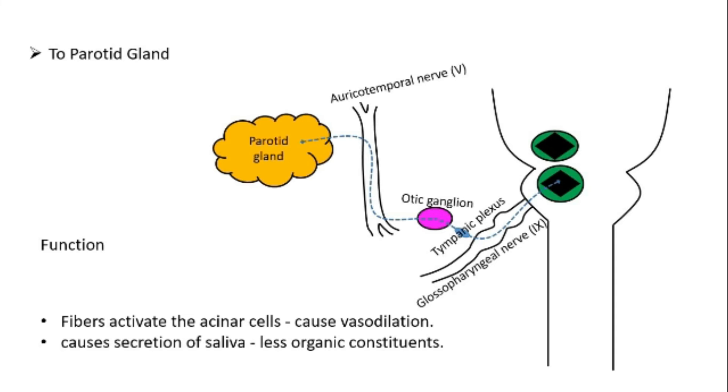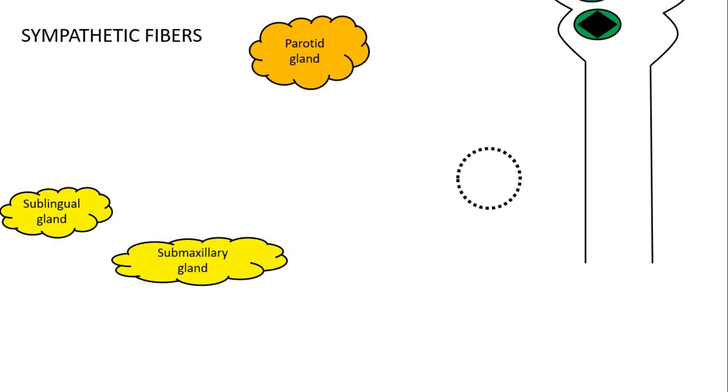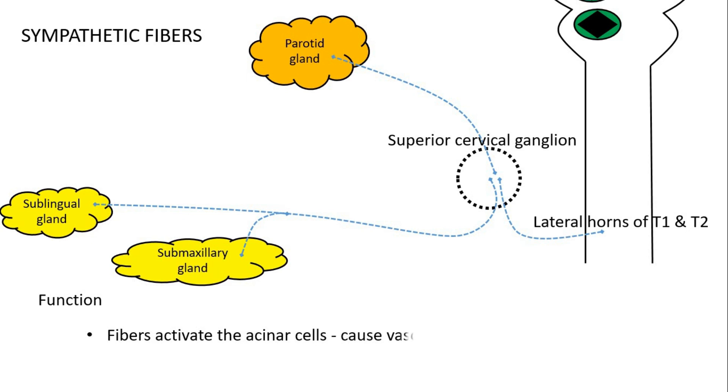Let's look at the sympathetic fibers. The preganglionic fibers arise from the lateral horns of the spinal cord of the first and second thoracic segments of the spinal cord and they end up in the superior cervical ganglion. From this ganglion, the postganglionic fibers arise and supply all three salivary glands: parotid, sublingual, and submaxillary glands. The function of the sympathetic nervous system is to stimulate the secretion of the salivary gland, but it will be thick and rich in organic constituents such as mucus, because the activated acinar cells cause vasoconstriction.